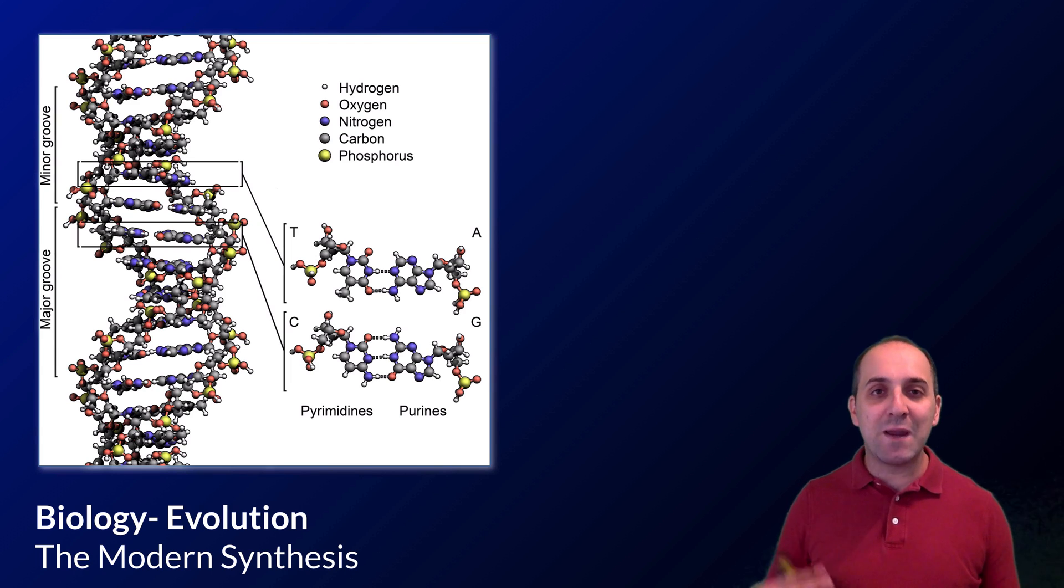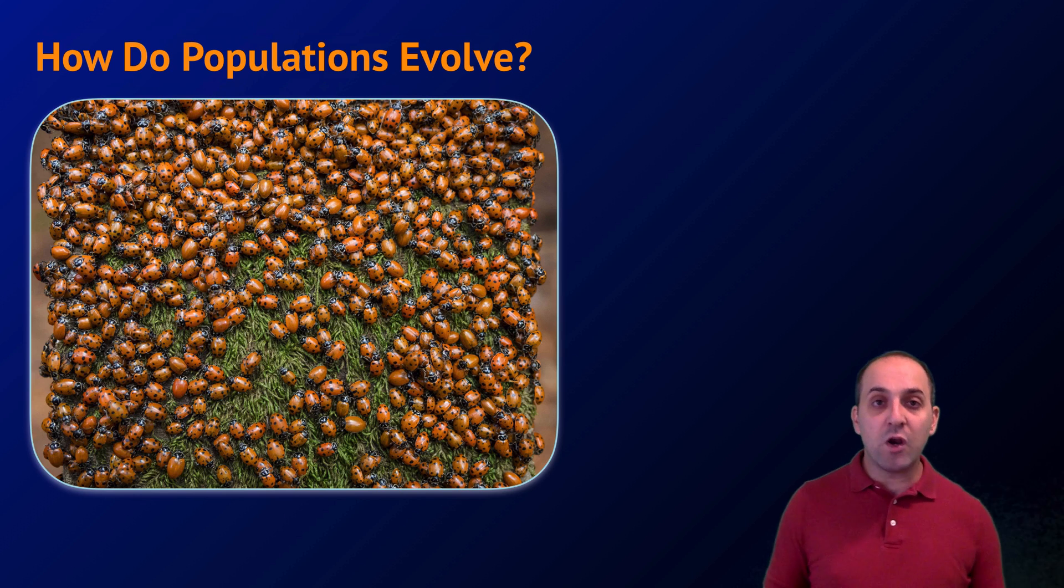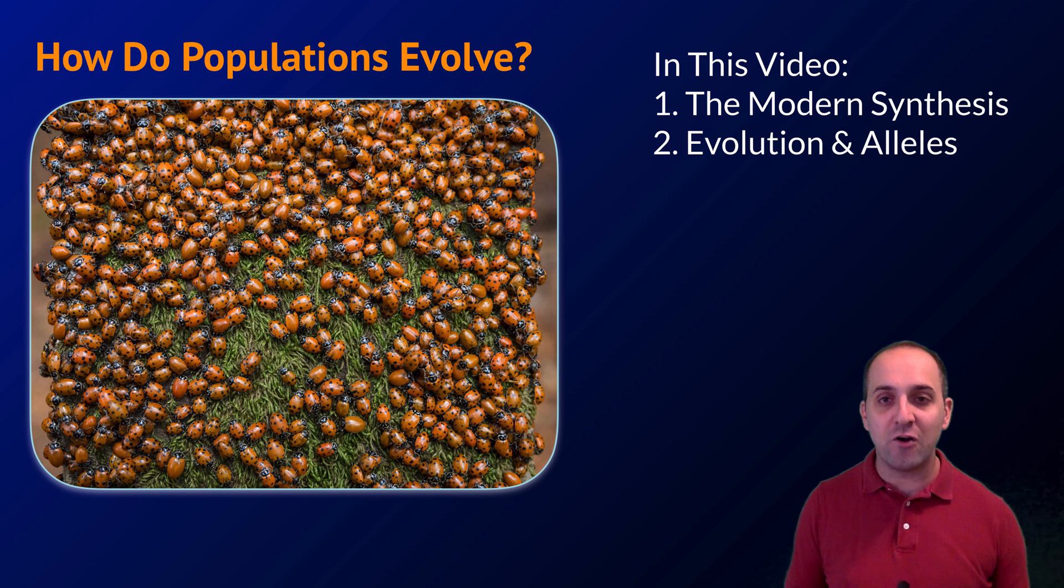The fusion of Darwinian mechanics of evolution with our modern understanding of genetics is referred to as the modern synthesis. It's important that we take a moment to discuss it so that we're all grounded in an up-to-date understanding of how evolution works. The question we're going to try to answer here is how do populations actually evolve? In this video we're going to talk about the modern synthesis and connect our understandings of evolutionary biology to concepts from modern genetics, specifically the allele concept and gene pools.